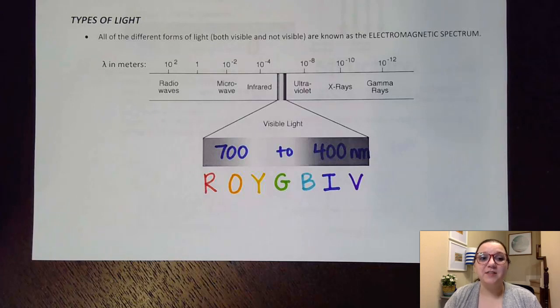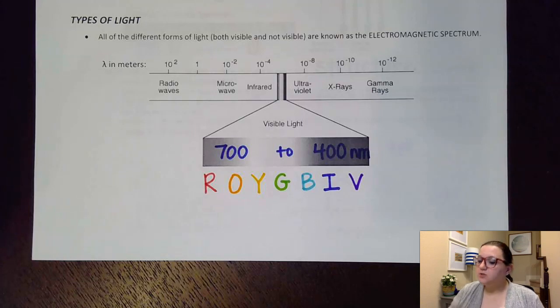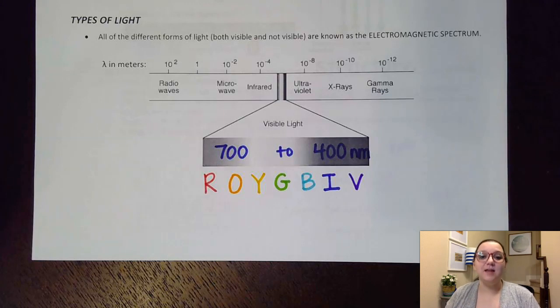Hey guys, Ms. Morisic here, and in this video we're going to be talking about the different forms of light on the electromagnetic spectrum, and we're also going to talk about spectroscopy, which is how matter responds when it's exposed to light. So to start us off here, hopefully this electromagnetic spectrum chart looks familiar. We did look at it back in pre-AP chemistry.